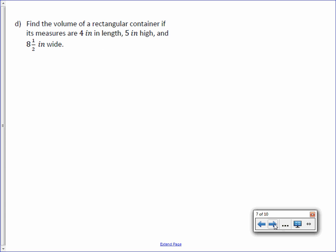Letter D: Find the volume of a rectangular container if its measures are 4 inches in length, 5 inches high, and 8 and a half inches wide. Let me show an example of changing this to a decimal. So for this problem, change 8 and a half to 8.5. We start with our formula: volume equals length, width, height. You, of course, can change it to an improper fraction if you prefer. It doesn't really matter. When we get to the next part, if we've got fractions, we probably want to change them to decimals just to make life a little bit easier.